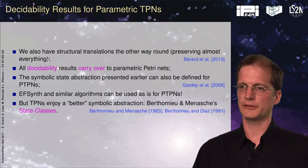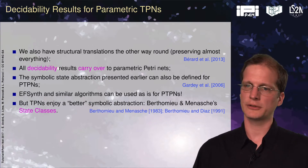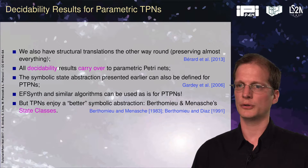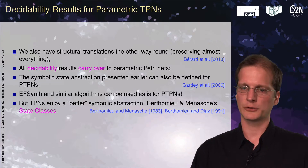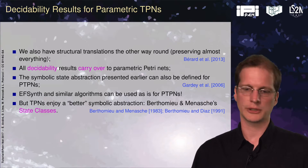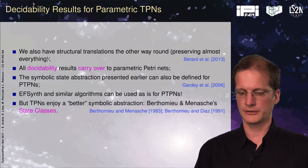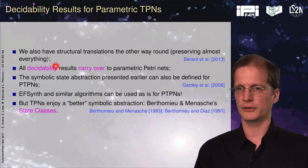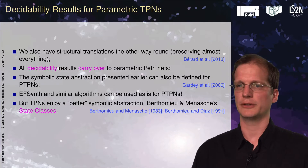We can start from our timed Petri nets, transform it into a timed automaton, and then verify on the timed automaton what we wanted to verify on the timed Petri net. We can do that also for parameters, and we get decidability results for parametric time Petri nets.